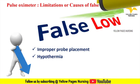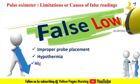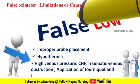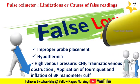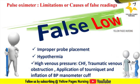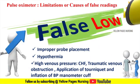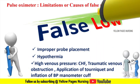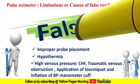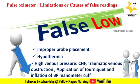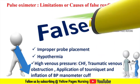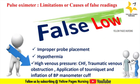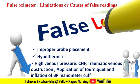High venous pressure — such as from congestive heart failure or traumatic venous obstruction — can cause false low readings. Application of a tourniquet or inflation of a blood pressure cuff on the same hand as the probe also leads to false low readings. Other causes include vasopressor drugs due to vasoconstriction, and stray ambient light such as sunlight.